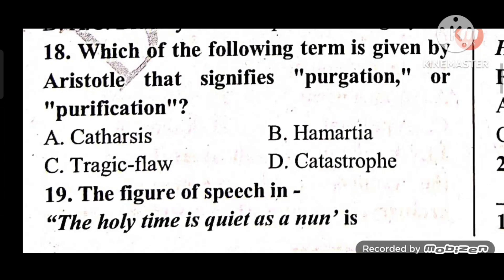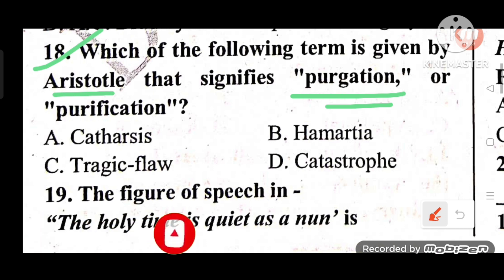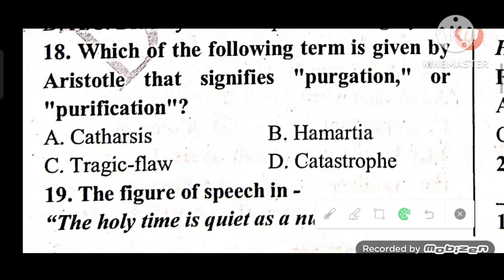Question 18: Which of the following terms given by Aristotle signifies purgation or purification? Options: A) Catharsis, B) Hamartia, C) Tragic Flaw, D) Catastrophe. The answer is A — Catharsis is Aristotle's term for purgation or purification.